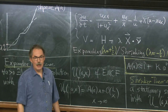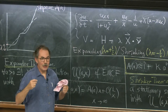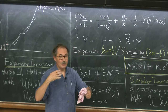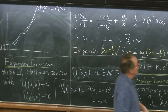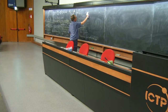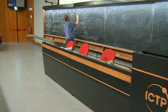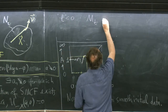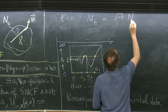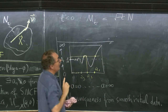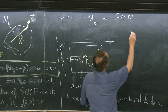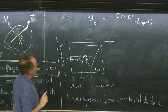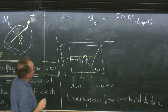In studying singularities, you can do a parabolic rescaling and study expanding or shrinking mean curvature flow. Before the singularity, you study shrinking mean curvature flow. For t less than zero, you assume your solution is of the form square root of minus t times N. If you let N be fixed, then you have a self-shrinker. If you allow N to depend on time, then it is good to choose this as your time dependency.